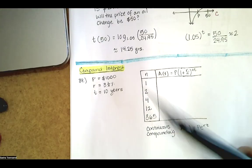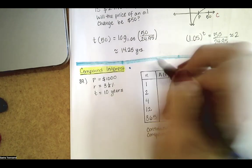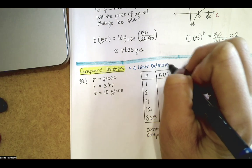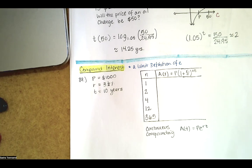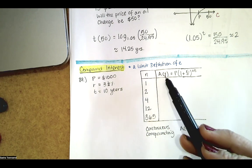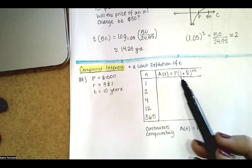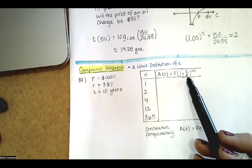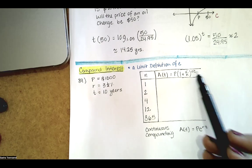In this video we discuss compound interest and also a limit definition of E, which is intimately related to the compound interest formula. The formula says that the amount or balance at time t (measured in years) equals the principal times one plus the interest rate in decimal form divided by the number of compoundings per year, all raised to the number of compoundings per year times the number of years.